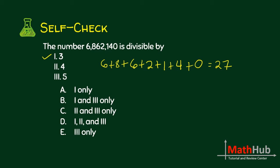How about by 4? Recall that a number is divisible by 4 if the last two digits are divisible by 4. 40 is divisible by 4, so therefore this is also true. And when a number is divisible by 5, it ends in 0 or 5, and the last digit here is 0. So therefore, everything is correct.